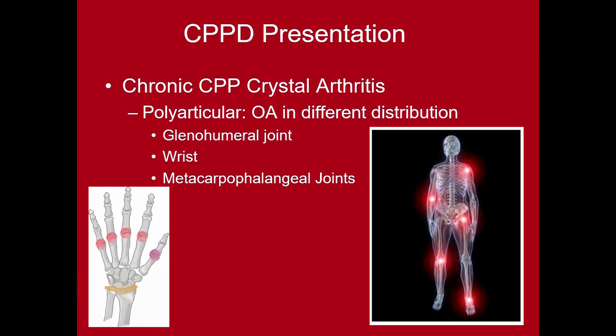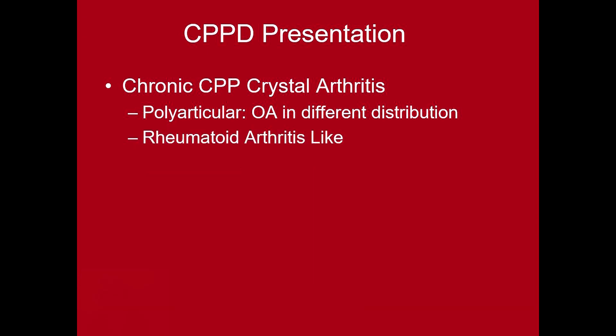Another presentation is chronic CPPD crystal arthritis. Patients can have a polyarticular osteoarthritis, but the distribution is different than normal osteoarthritis — there can be shoulder or glenohumeral joint involvement, wrist involvement, and metacarpophalangeal joint involvement. This leads to a rheumatoid arthritis-like presentation: if they have metacarpophalangeal and wrist involvement with associated inflammation such as occurs in pseudogout, this could look just like rheumatoid arthritis.